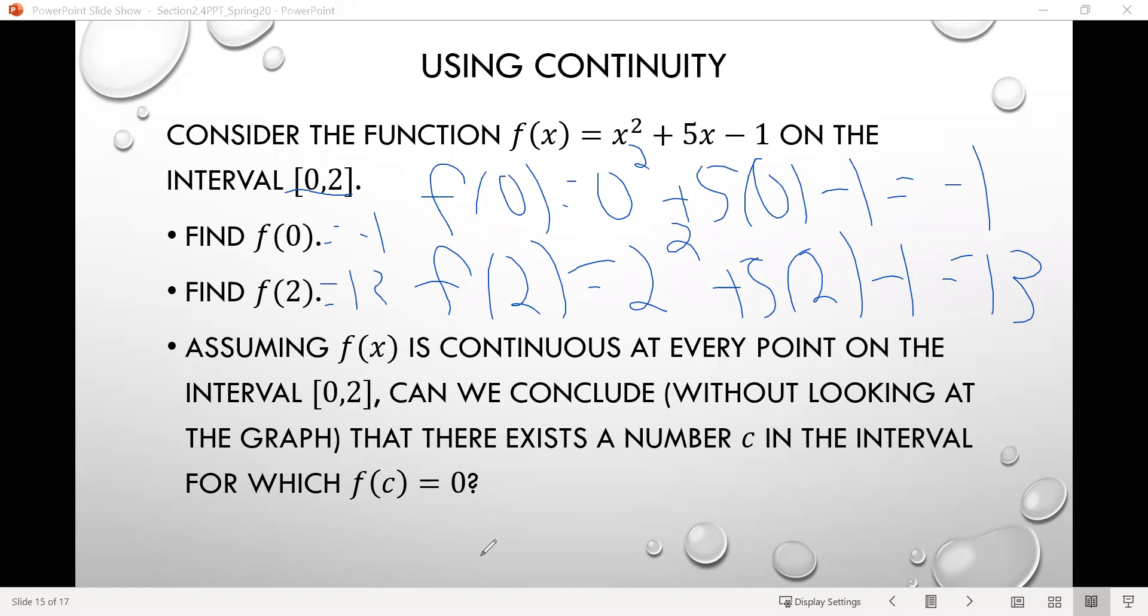We have f of 0 is negative 1 and f of 2 is 13. And then the third part says, assuming that f of x is continuous at every point along that interval, so that would mean there are no breaks in the function, can we conclude without looking at the graph that there exists a number c in the interval, so meaning some number between 0 and 2, for which f of c equals 0, meaning if we input that value into the function, the output is 0. So are we guaranteed that there is some number between 0 and 2, such that if we input it into the function f, we're going to get 0 as an output. And we're told that this function is continuous at every point on that interval. So what do you guys think?